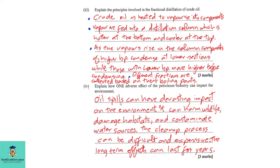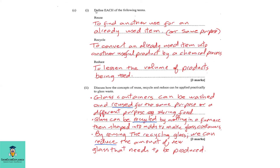Part b, question four: Explain how one adverse effect of the petroleum industry can impact the environment. First, oil spills can have a devastating impact — harming wildlife, damaging habitats, and contaminating water sources. The cleanup process is difficult and expensive, and long-term effects can last for years. We could also consider the production of carbon dioxide, a major greenhouse gas, which causes global warming, with further effects that can be discussed.